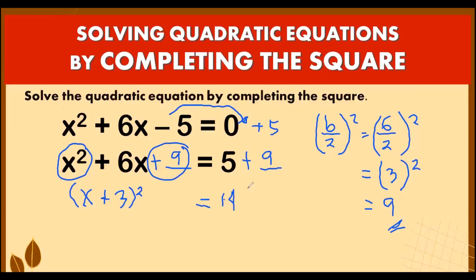Since we now have the quantity (x + 3)², we are going to remove the square symbol on the left side by taking the square root of (x + 3)² and the square root of 14. The square root symbol and the squared cancel out, so what remains on the left side is x + 3 = √14. Since 14 is not a perfect square, we place plus or minus √14.